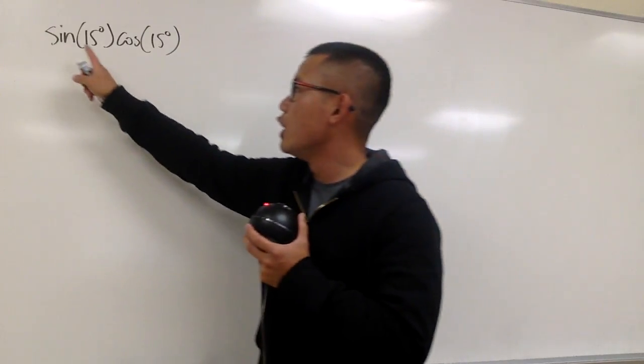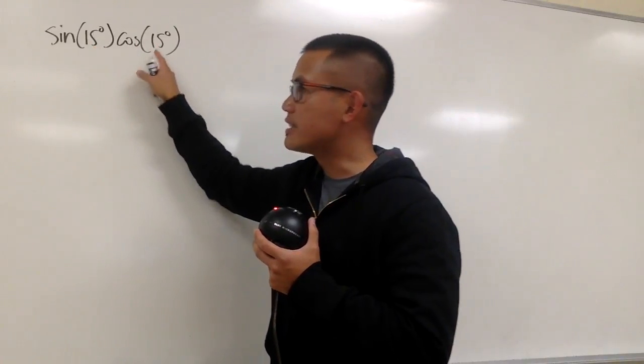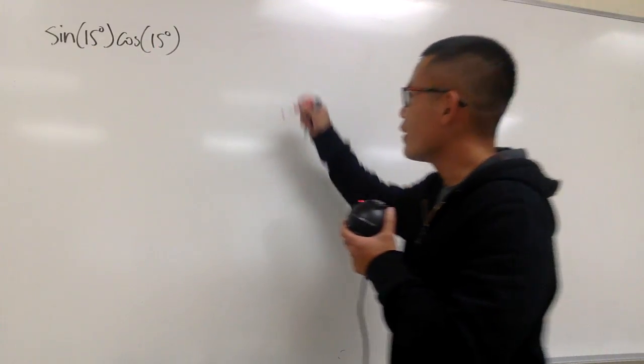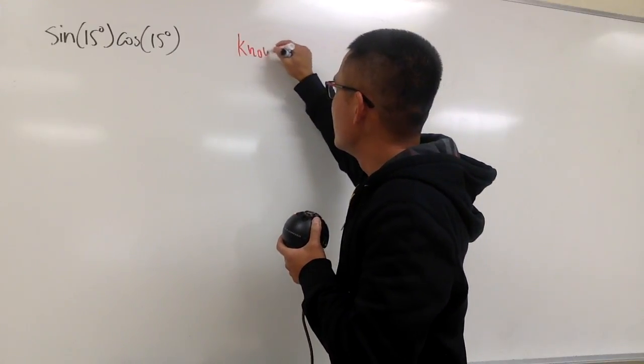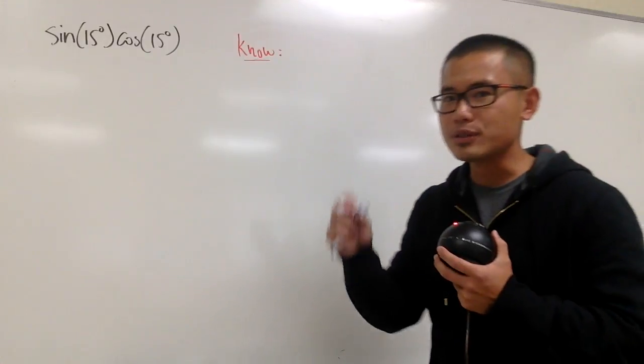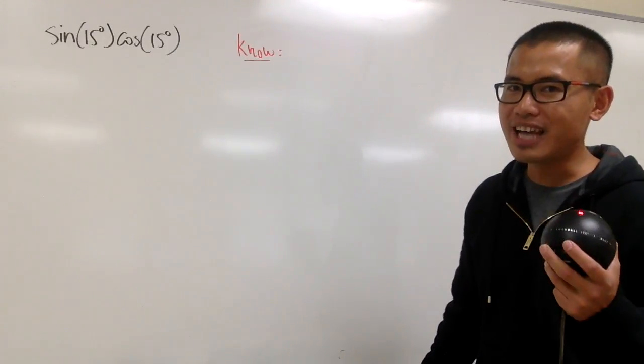Because we notice that we have sine times cosine, and the angles inside are the same. Let me show you another way to do it. I'm going to utilize this identity here. The identity that we have that involves sine times cosine is the double angle formula for sine.